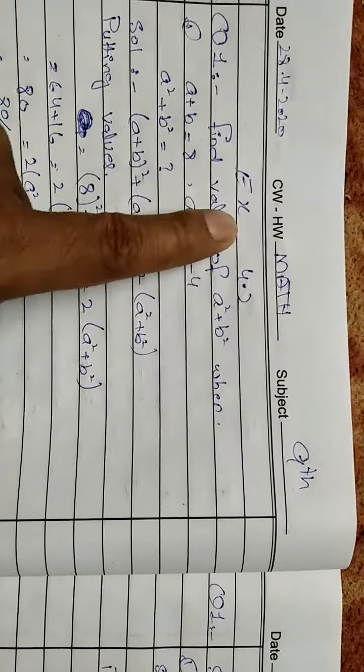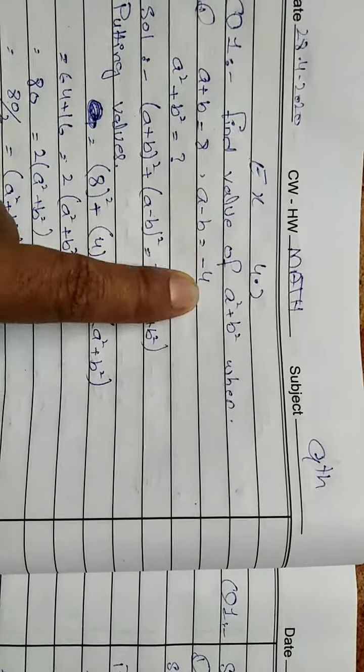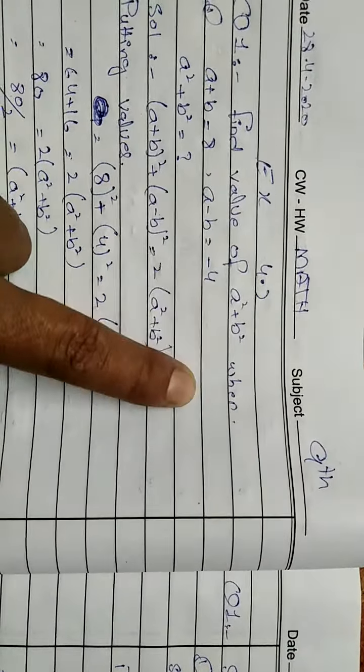Good morning students. Exercise 4.2: Find the value of a² + b² when a + b = 8 and a - b = -4. We will solve this.